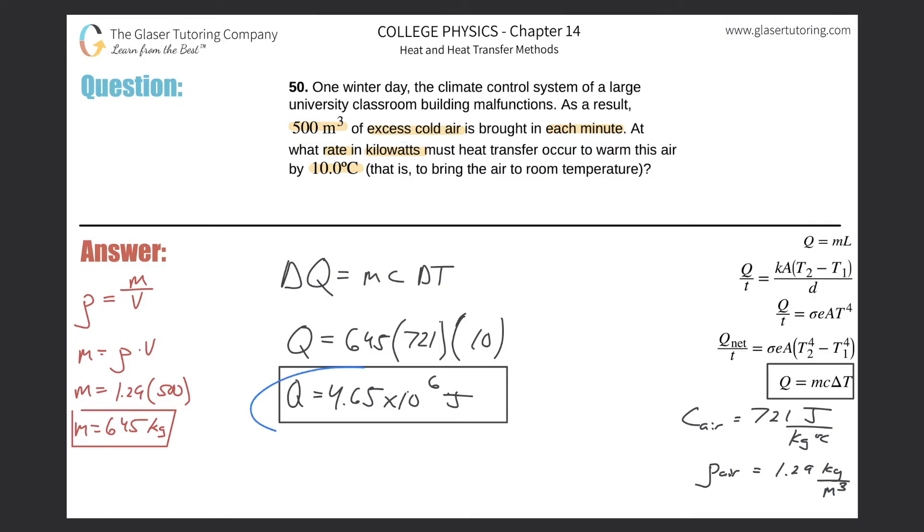So basically this is the amount of heat energy necessary to raise this mass of air, but this mass of air is coming in every minute, right? So basically this is the energy necessary per minute, right? Because it correlates with this amount of mass, and this amount of mass is entering the building every single minute. So hopefully that makes sense.